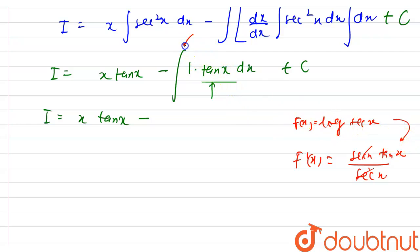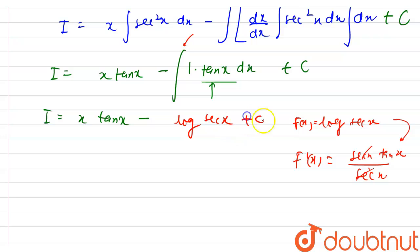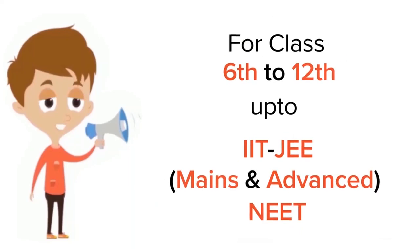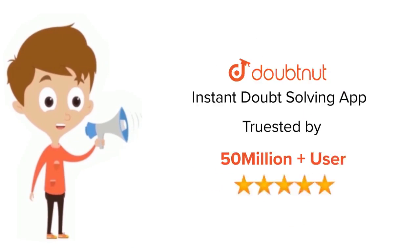So tan x is the differentiation of log|sec x|, and since integration is the anti-derivative — meaning if tan x is the derivative of log|sec x|, then log|sec x| is the integral of tan x — the final answer for our question is I = x·tan x − log|sec x| + C.